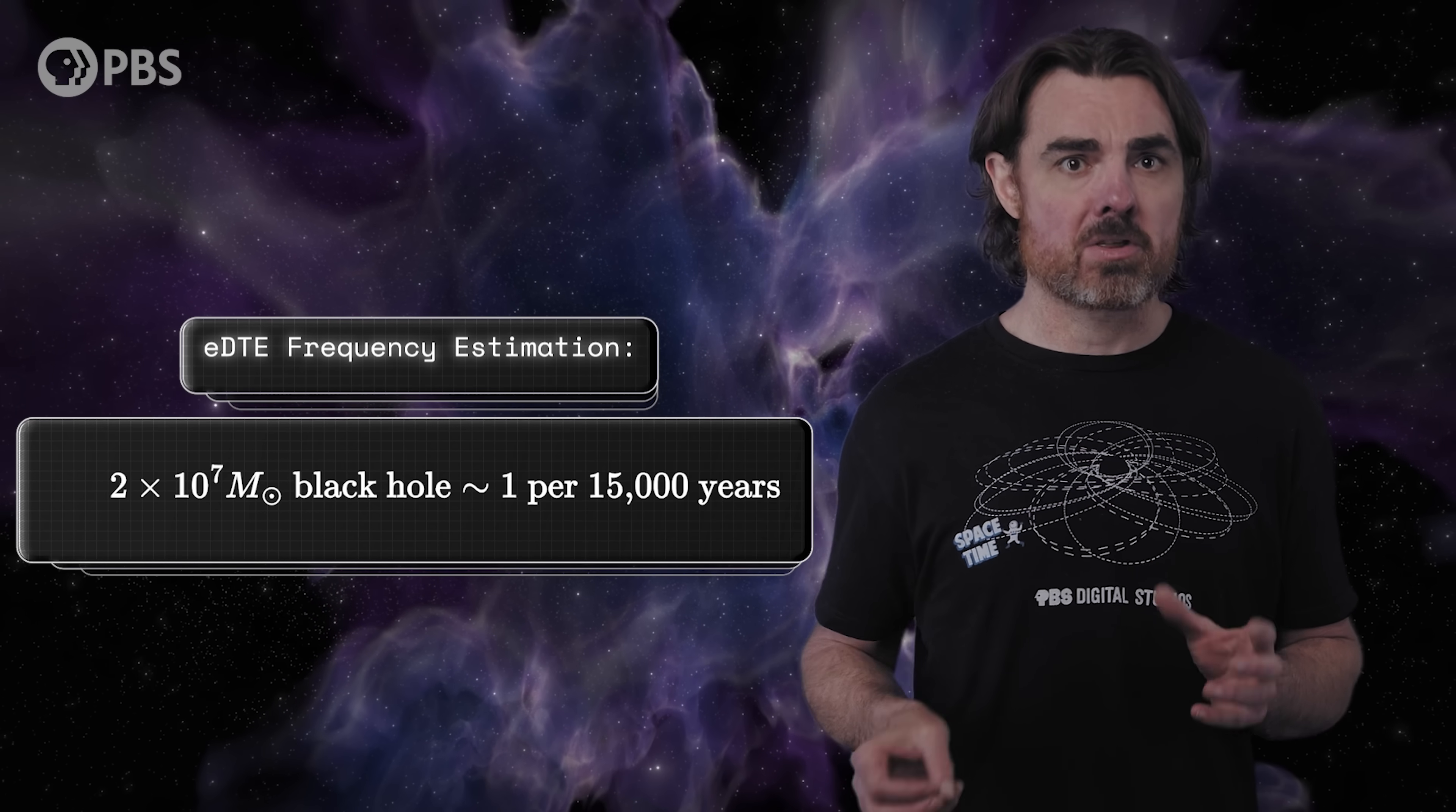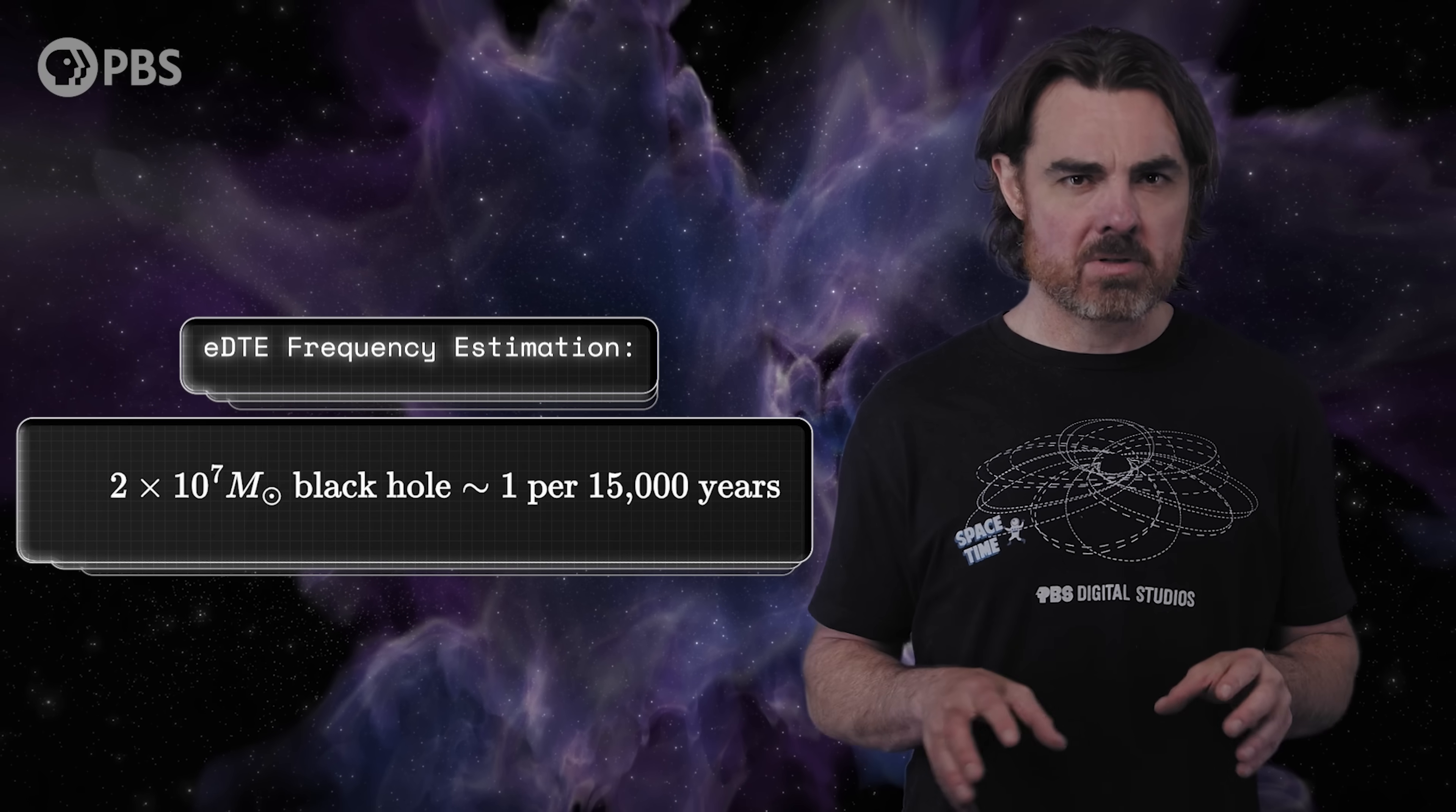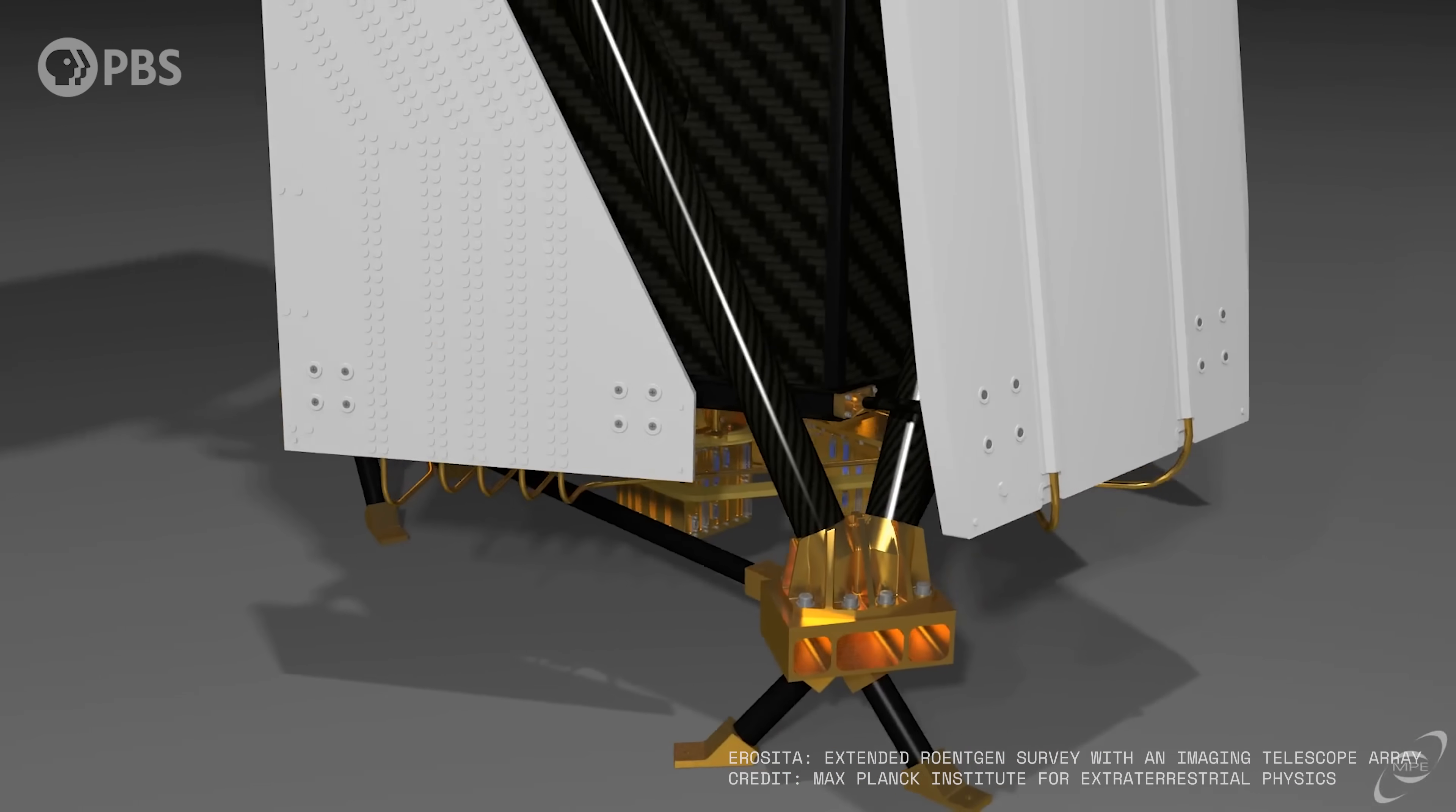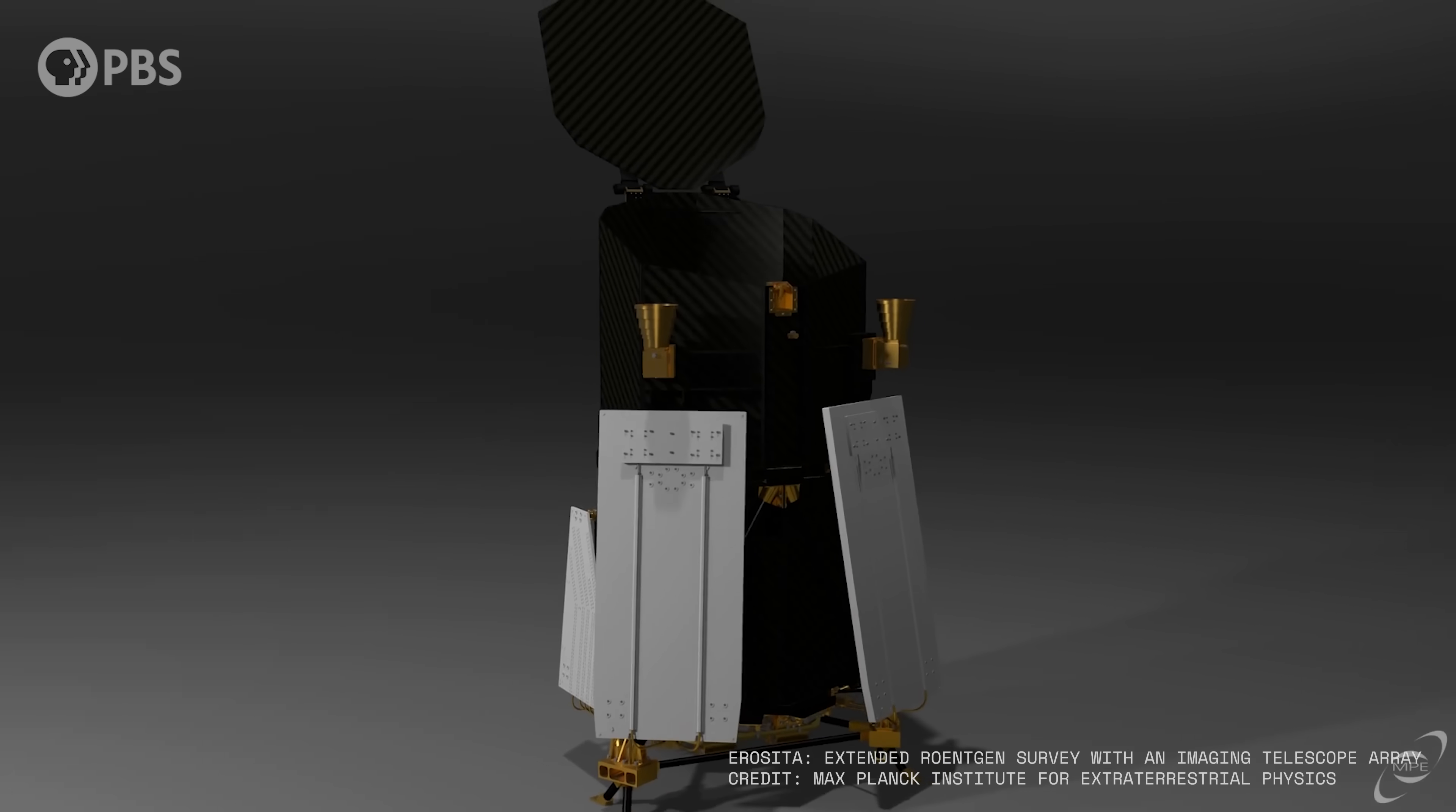Now, to spot such a thing we need to monitor a lot of galaxies, which is something new large field surveys can do, but we also need to do it at X-ray wavelengths, which is much harder than visible light wavelengths. Fortunately, we already have an instrument that may be up to the task. ERAZETA is an X-ray detector on the SPECTR-RG space observatory, and it's created an X-ray survey over the entire sky. Unfortunately, operations were suspended in 2022 before covering the X-ray energies needed to detect an ETDE.